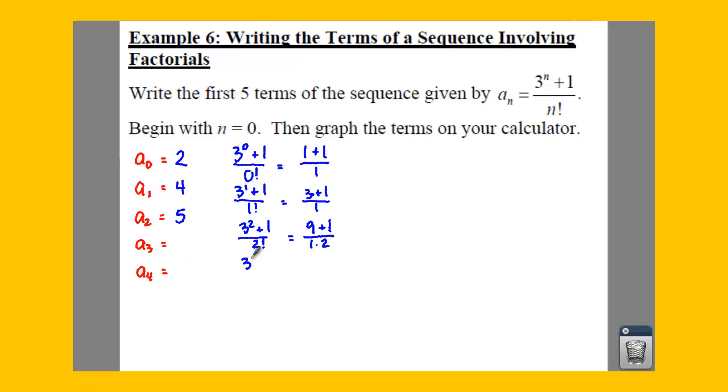If we plug 3 in, you have 3 cubed plus 1 over 3 factorial, which means you have 27 plus 1 all over 1 times 2 times 3. So that gives us 28 over 6, which reduces to 14 thirds.